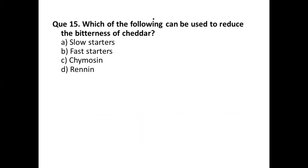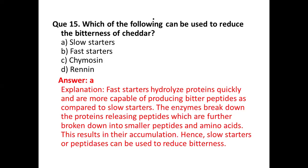Question number fifteen: which of the following can be used to reduce the bitterness of cheddar? Options are: (a) slow starters, (b) fast starters, (c) chymosin, (d) rennet. The correct answer is option (a) slow starters. Fast starters hydrolyze proteins quickly and are more capable of producing bitter peptides compared to slow starters. The enzymes break down proteins releasing peptides, which are further broken down into smaller peptides and amino acids; slow starters reduce accumulation and thus bitterness.